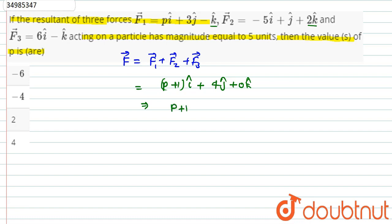So the resultant is P plus 1 i cap plus 4 j cap. The magnitude equals 5, so square root of P plus 1 whole square plus 4 square equals 5. Squaring both sides, P plus 1 whole square plus 16 equals 25.